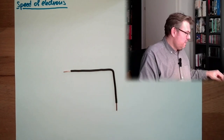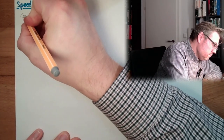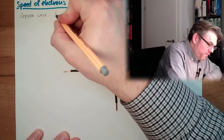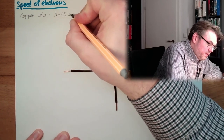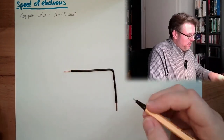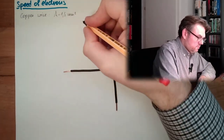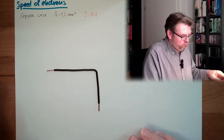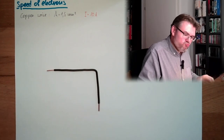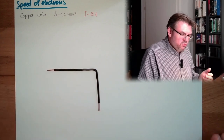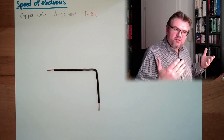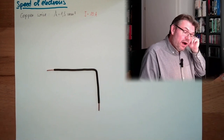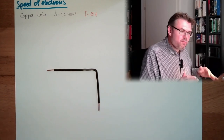We have a copper wire with an area of 1.5 square millimetre, and we have a current of 10 ampere rushing through this. It's quite high but still in use — as if you would use a power socket and your hair dryer, you would probably already have 10 ampere running. So this is not an unusual current; it's high, but not that high.